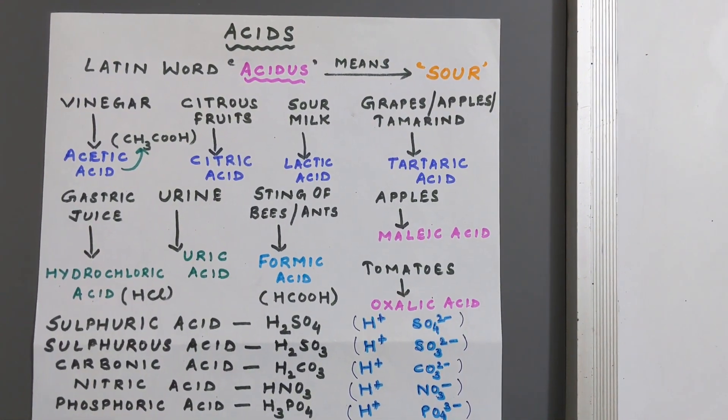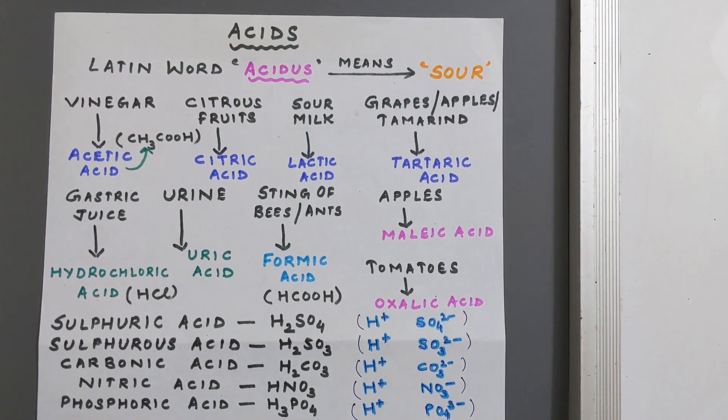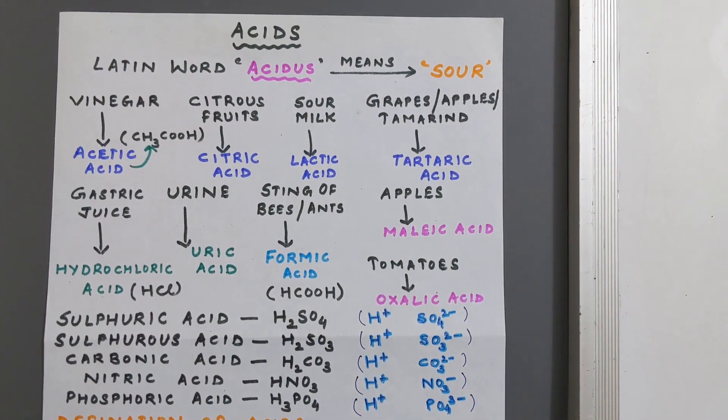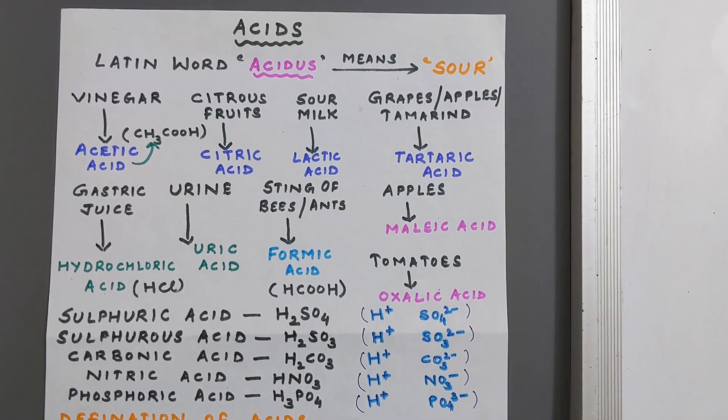So let us discuss what are acids. The term acid comes from the Latin word acidus which means sour. The very common things which we see around us all have acids.